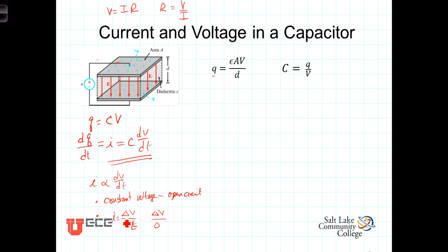Current is proportional to the change in voltage over change in time. So if you change the voltage in no time, that would require an infinite current. There's no such thing as an infinite current — you can't move an infinite amount of charge, or you can't move a finite amount of charge in zero time. It takes time for the current to flow. Thus, you don't instantaneously change the voltage.